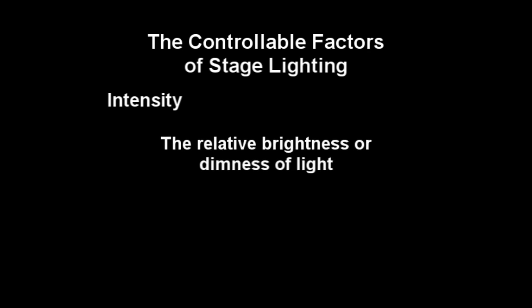In service of the functions of stage lighting, one of the controllable factors a designer considers is intensity. The intensity of light — that is to say the relative brightness or dimness of light — can be controlled in several ways. When we spoke of the functions of stage lighting, we said that the visibility of a production is affected by the intensity of light. If the light directed into an area is too bright or too dim, it will cause eye strain on the audience.